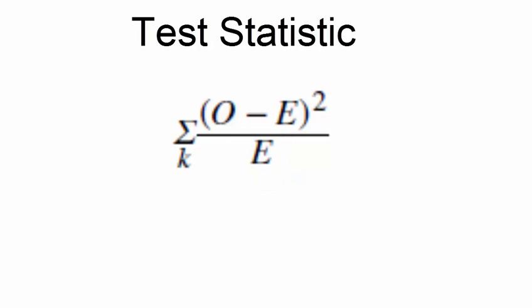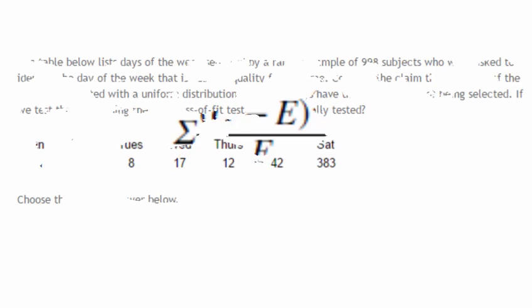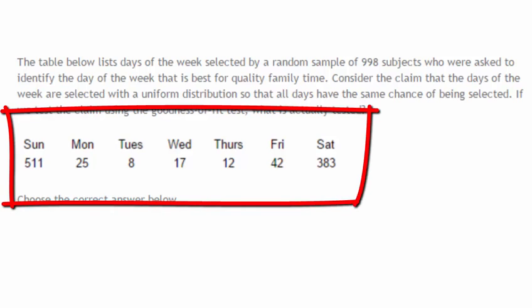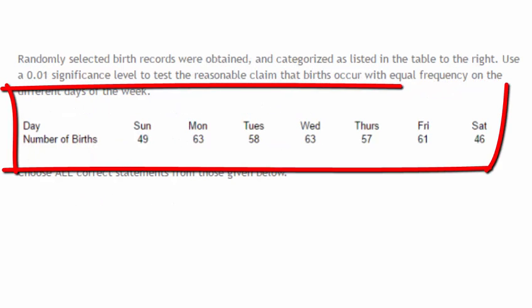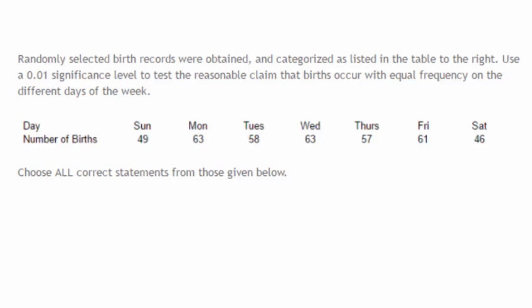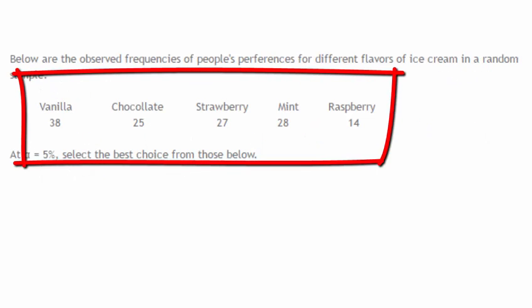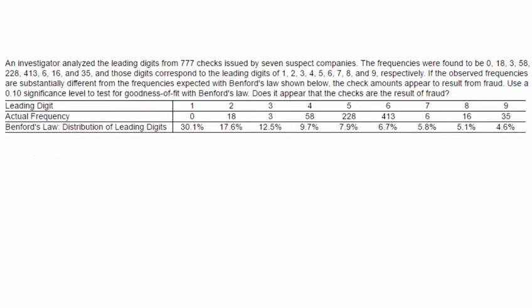An example of a goodness of fit test for a uniform distribution: here we have a table of days of the week in which subjects identified the best day for quality family time. Another example gives the number of births recorded on the seven days of the week at a particular hospital, asking if these numbers represent a uniform distribution. Here we're also given different flavors of ice cream and asked to determine if there is a preference, or are all flavors equally preferred?